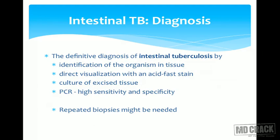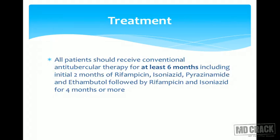In tuberculosis, there is intense T-cell activity and multiplication, so ADA enzyme activity increases, resulting in elevated ADA levels whenever mycobacterial antigens are present in the sample. The definitive diagnosis requires tissue diagnosis — identifying acid-fast bacilli by staining or culture. PCR is highly sensitive and specific. Multiple biopsies, either simultaneous or repeated, are often required.